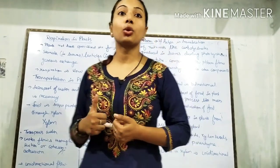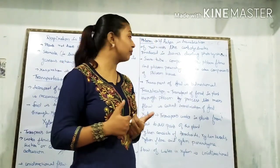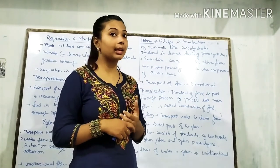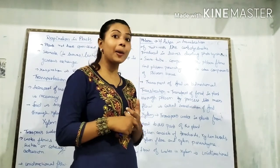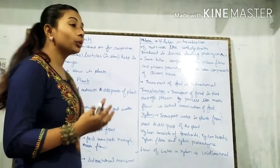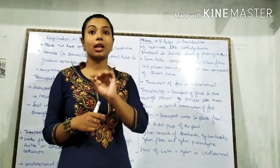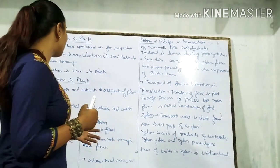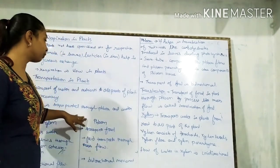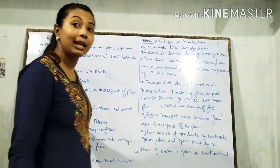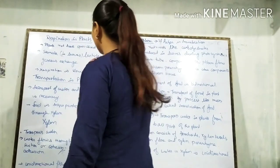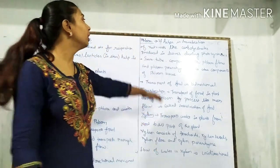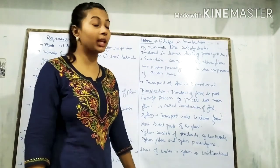For this, we have two vessels: xylem vessels and phloem vessels. They are called vascular bundles and conducting tissues. The xylem transports water and phloem transports food. I have also given a difference between xylem and phloem, which we will see later.